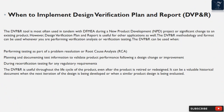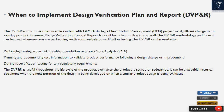When to implement DVP&R: The DVP&R tool is most often used in tandem with DFMEA during a new product development project or significant change to an existing product. However, the DVP&R is useful for other applications as well. The DVP&R can be used when performing testing as part of a problem resolution or root cause analysis, planning and documenting test information to validate product performance following a design change, or during recertification testing for regulatory requirements. The DVP&R is useful throughout the life cycle of the product — even after the product is retired or redesigned — as a valuable historical document when the next iteration of the design is being developed or a similar product design is being evaluated.